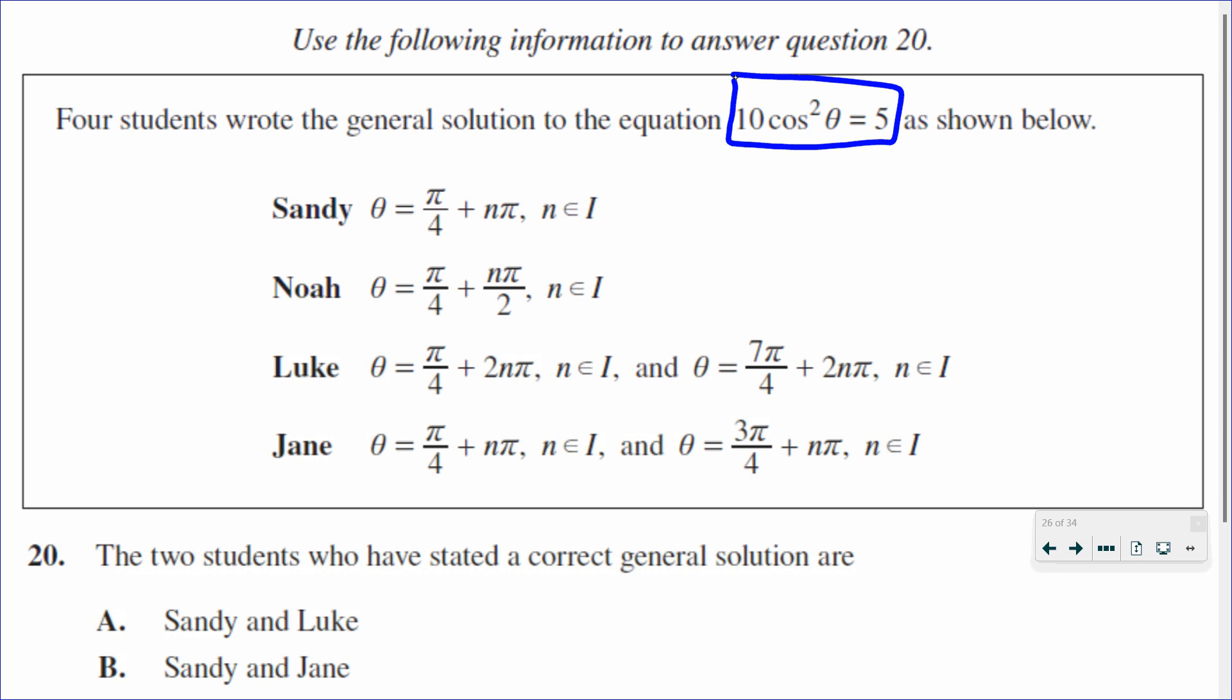So let me find out those. First thing I'm going to do is divide both sides of this equation by 10, because I want to get my cosine by itself. So I do that, and I get cosine squared is equal to 5 over 10, which in lowest terms is 1 over 2.